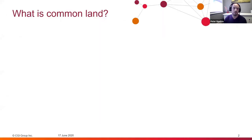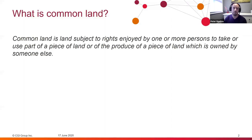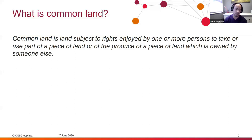So the first bit: what is common land? Common land is land subject to rights enjoyed by one or more persons to take or use part of a piece of land, or of the produce of a piece of land, which is owned by someone else. I want to touch on a few key terms that you're going to hear me use in this presentation, related to common land, and try and explain those.